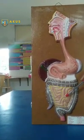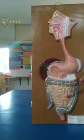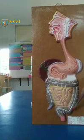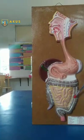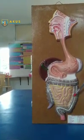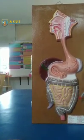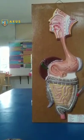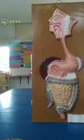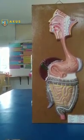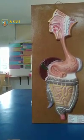Whatever undigested food material remains after complete digestion in the small intestine is passed to the large intestine. You can see here the position of the large intestine. In the large intestine, water and some salts are absorbed from the undigested food. The undigested food material becomes solid or semi-solid waste, which passes further to the anus to be removed from the body.